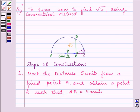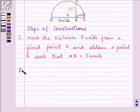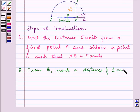Second step: from B, mark a distance of 1 unit and mark the new point as C.